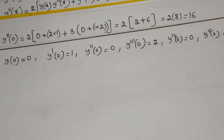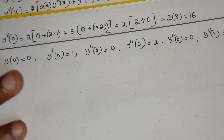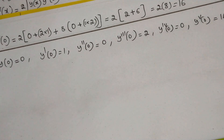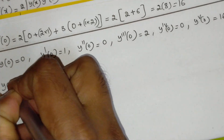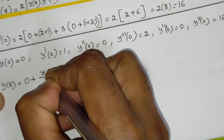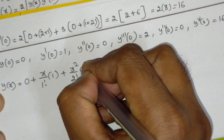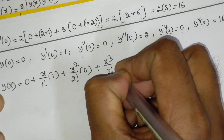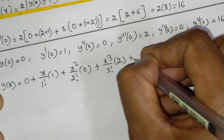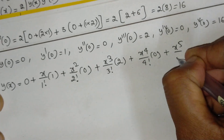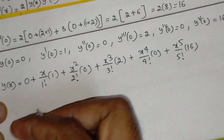We have: y(0)=0, y'(0)=1, y''(0)=0, y'''(0)=2, y''''(0)=0, y^(5)(0)=16. Therefore the Maclaurin series up to x^5 is: y(x) = y(0) + x/1!·y'(0) + x²/2!·y''(0) + x³/3!·y'''(0) + x⁴/4!·y''''(0) + x⁵/5!·y^(5)(0).